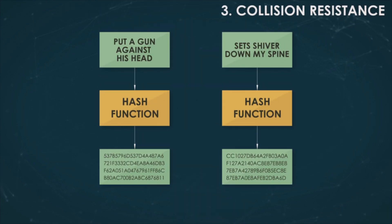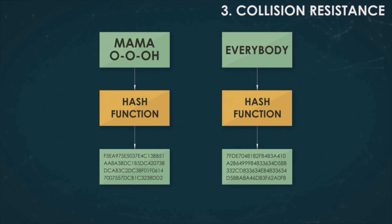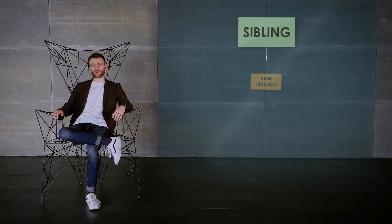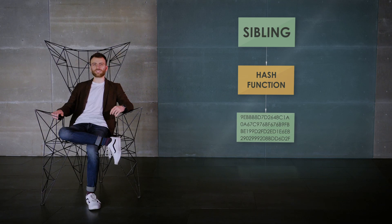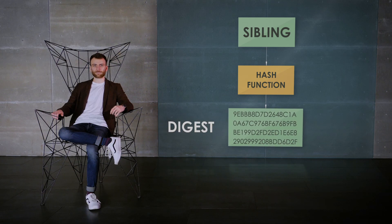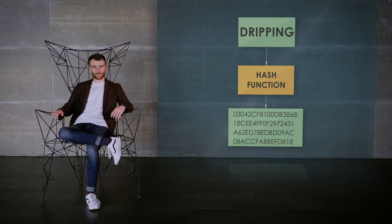Third, collision resistance, meaning it is unfeasible to find two messages with the same hash. A crucial quality of hash functions is that they constitute a representation of data in an encrypted and compressed form, otherwise known as a digest. Even a minor alteration to the data leads to a complete change in the hash.